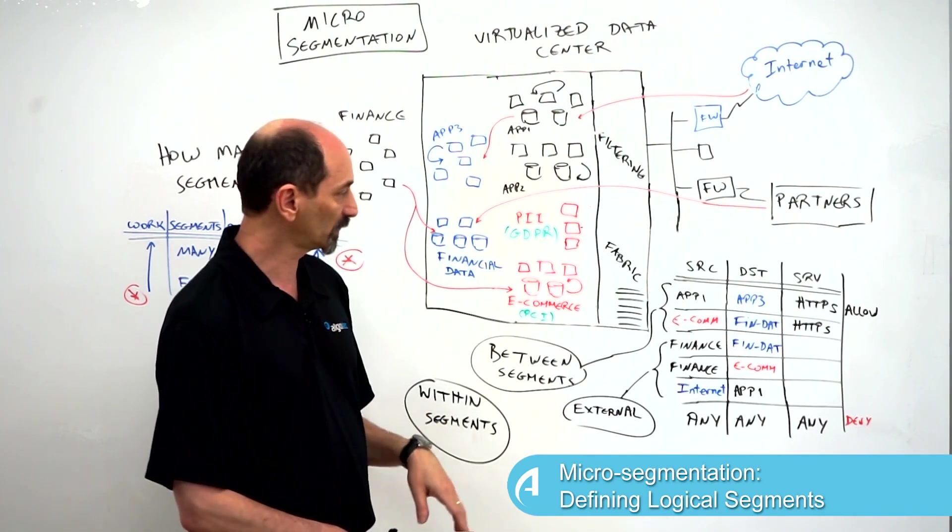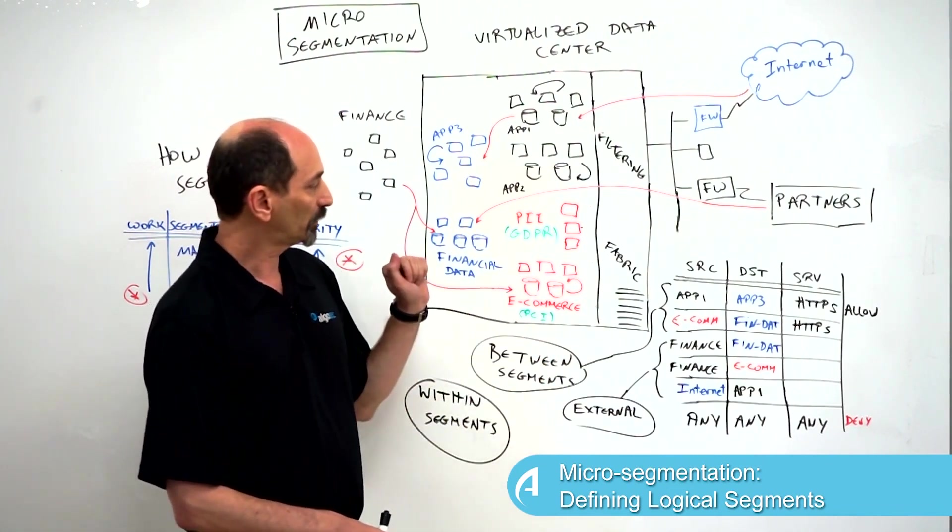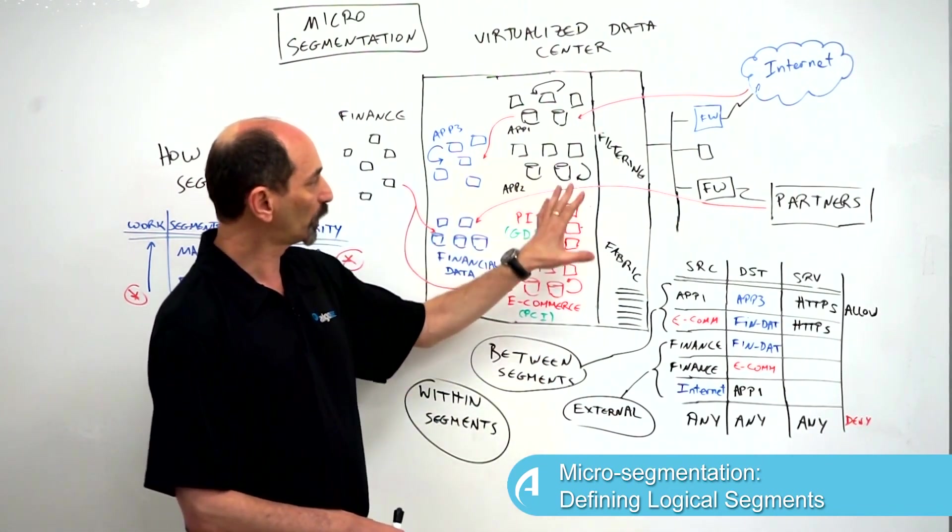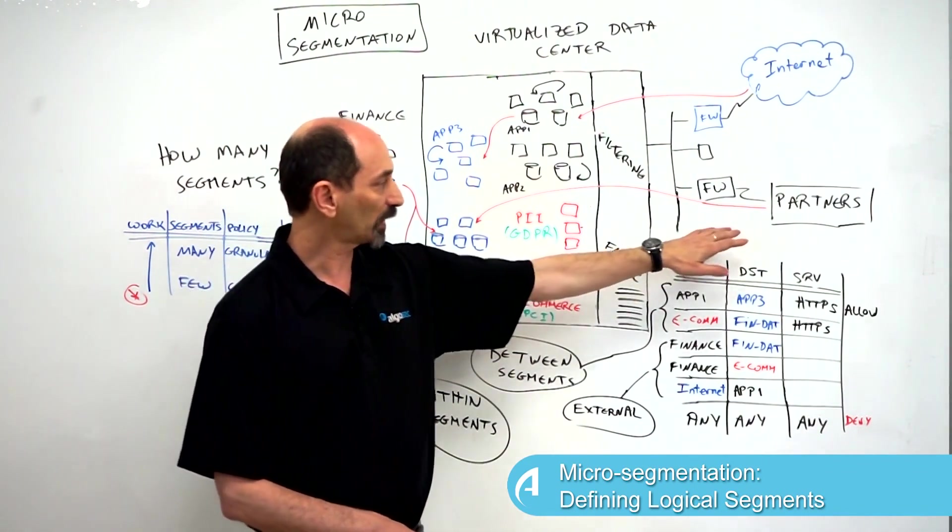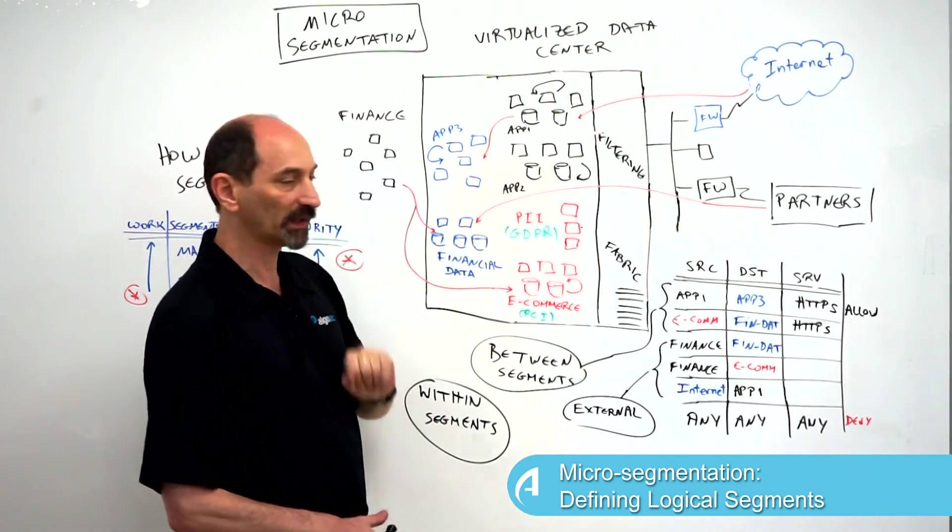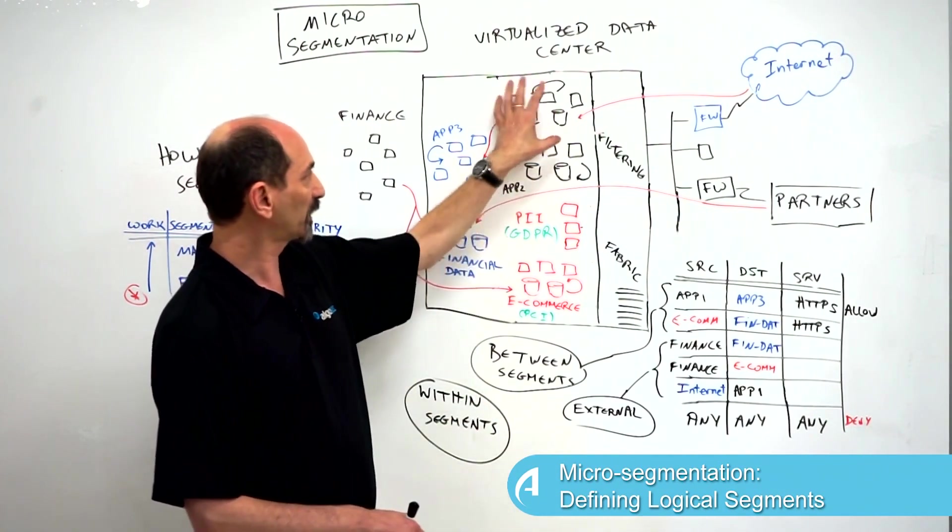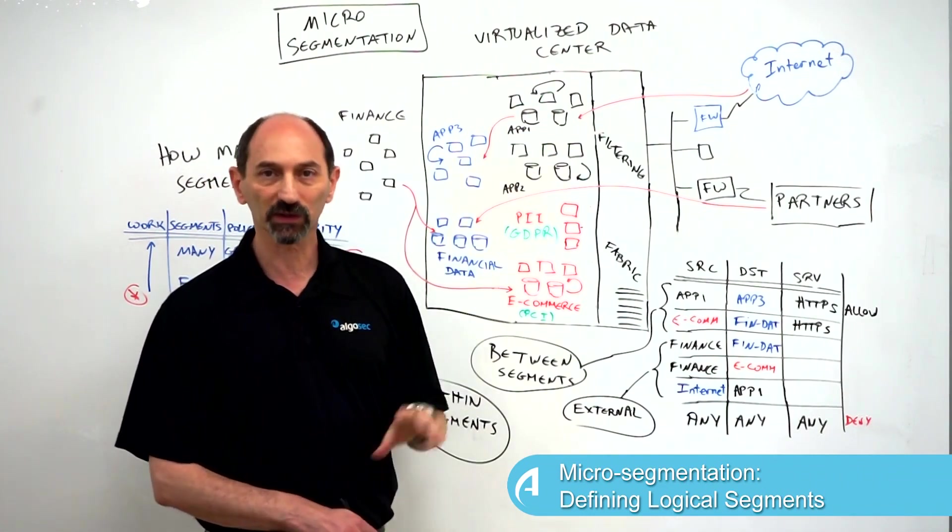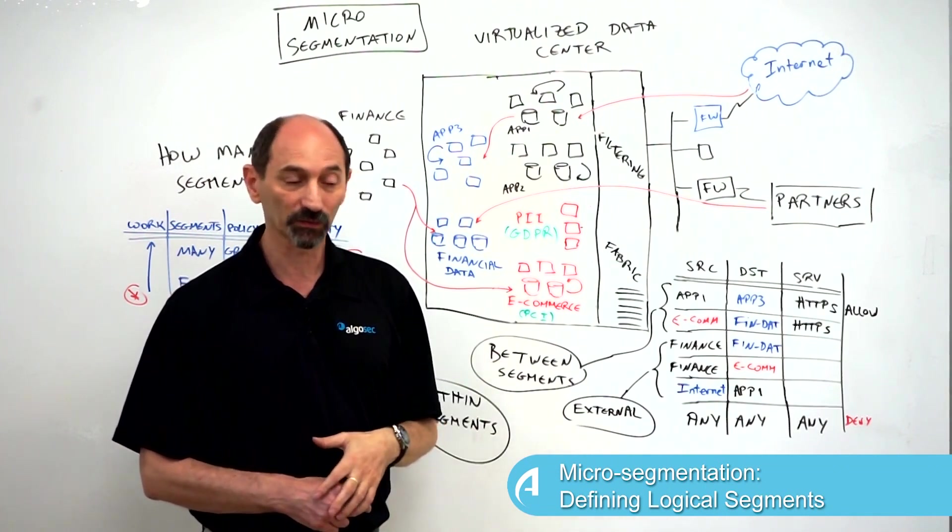We've also gone through the exercise of discovery, so we've actually identified from various sources from the network what flows are visible inside the data center. We know that traffic is coming in from the partners area to let's say the financial data. We also recognize that applications communicate with other applications inside the data center.